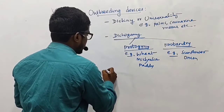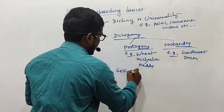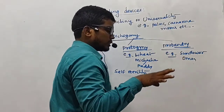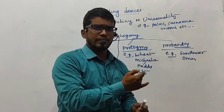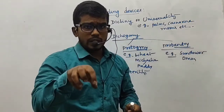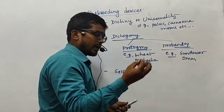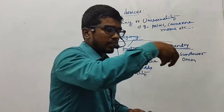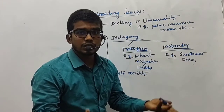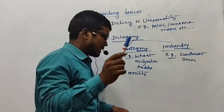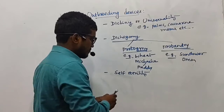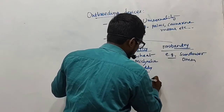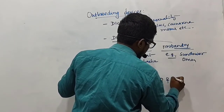Next, we also have self-sterility. This is found mostly in bisexual plants. Due to self-sterility, after the release of pollen grains from the anthers, they fail to germinate on the stigma of the same flower — hence cross-pollination must occur. The best examples are Abutilon and Passiflora.